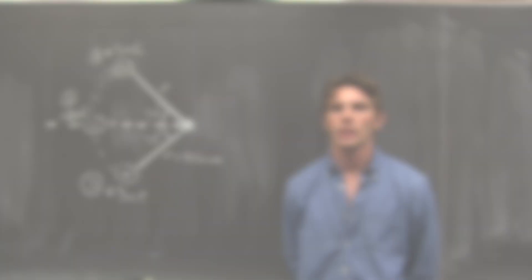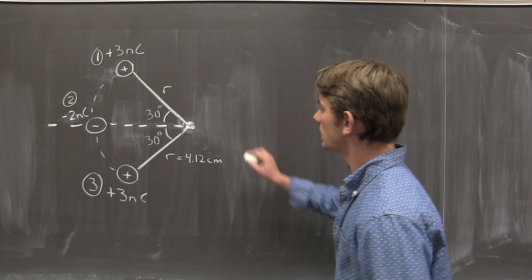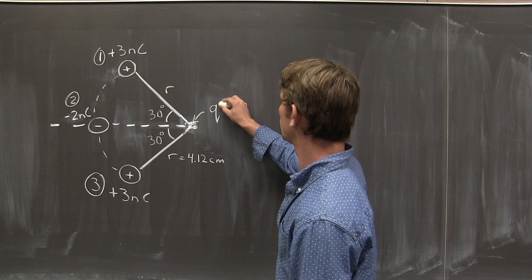Now for part b of this problem, we suppose that there is a new charge. I'll call little q equal to negative 5.05 nanocoulomb at the location of the point p where we found the electric field in part a. And we're asked with finding the force on this charge due to the configuration of those three.